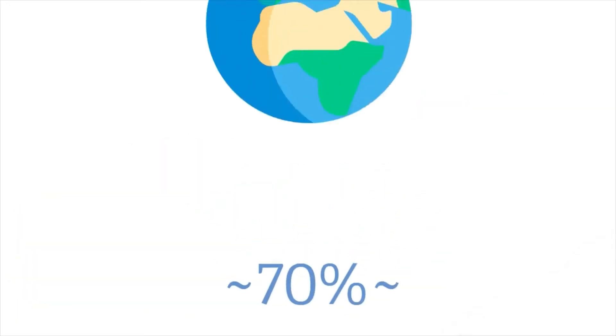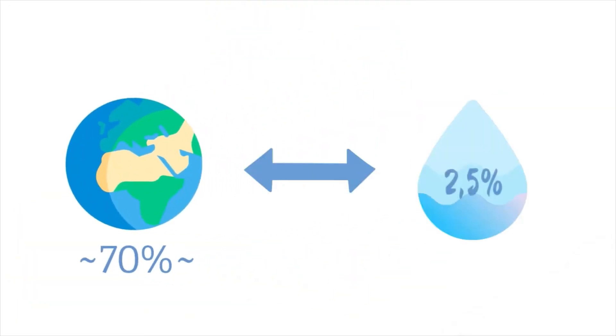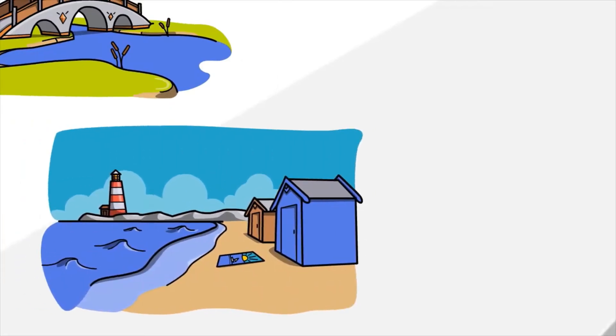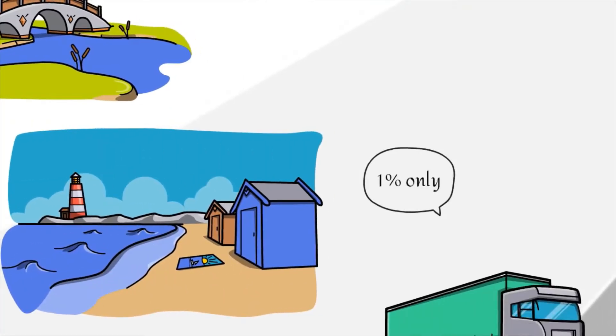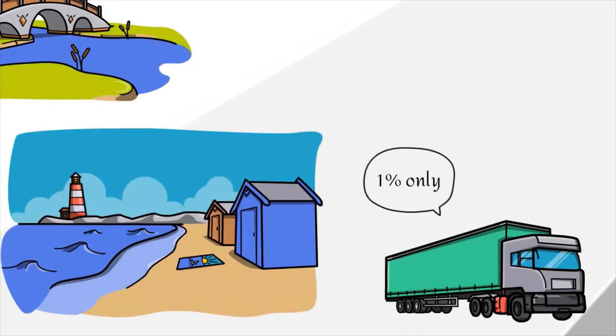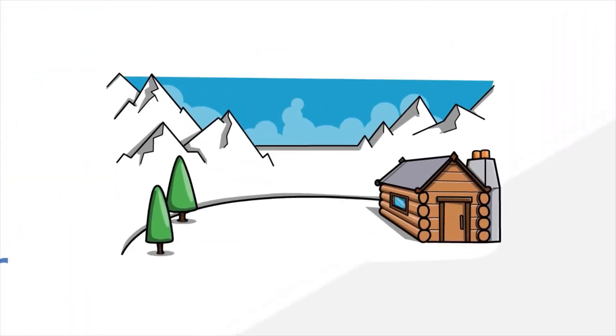While nearly 70% of the world is covered by water, only 2.5% of it is fresh. The rest is saline and ocean-based. Even then, just 1% of our fresh water is easily accessible, with much of it trapped in glaciers and snowfields.